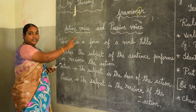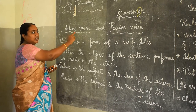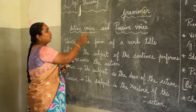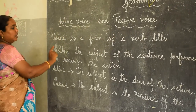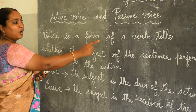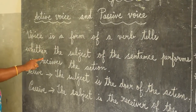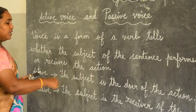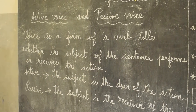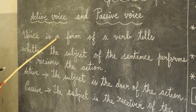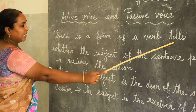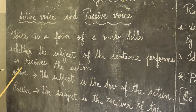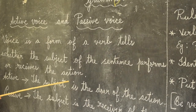Here is a simple example. Voice is a form of a verb that tells whether the subject of the sentence performs or receives the action. Voice is the form of a verb that tells whether the subject of the sentence performs or receives the action.